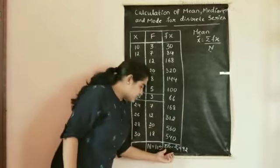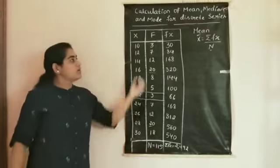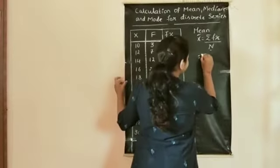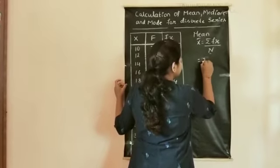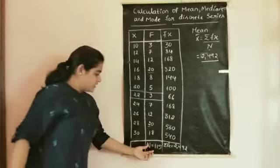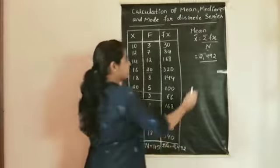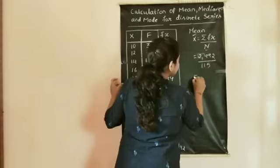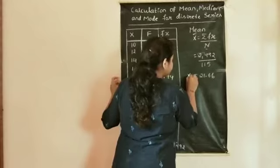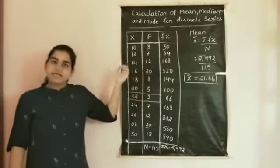Now that we know the summation of fx and the value of n, we can find the mean. Substituting the values: mean = 2492 divided by 115, which gives a value of 21.66. This is the arithmetic mean for the given discrete series.